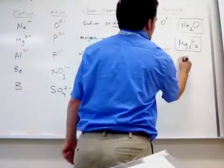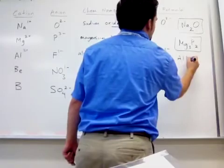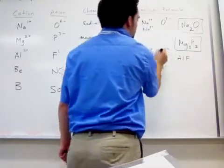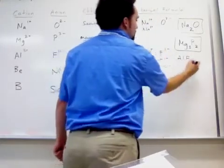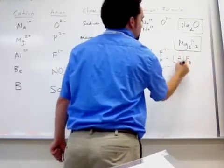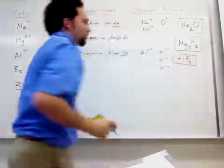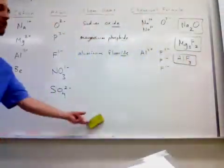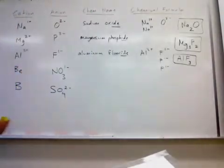So now I can write out the formula: AlF₃. That's the chemical formula for aluminum fluoride.